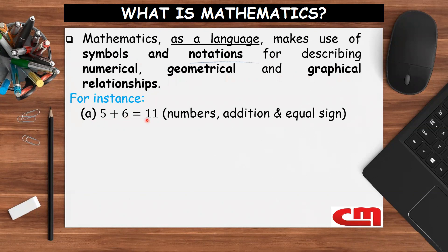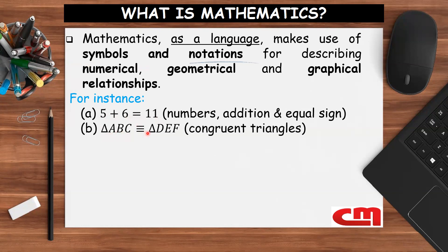For instance, five plus six equals eleven — we have used the symbols 5, +, 6, =, and 11 to give us a numerical relationship. Triangle ABC is congruent to triangle DEF is a geometrical relationship, where we use the triangle symbol, letters, and the congruence sign to express that relationship.